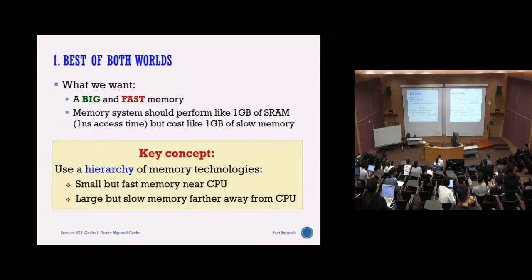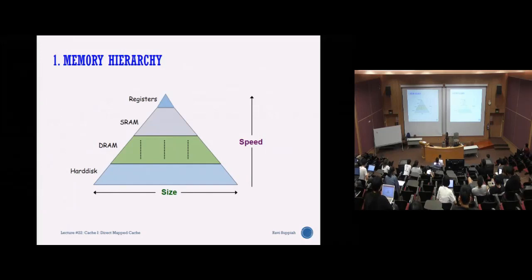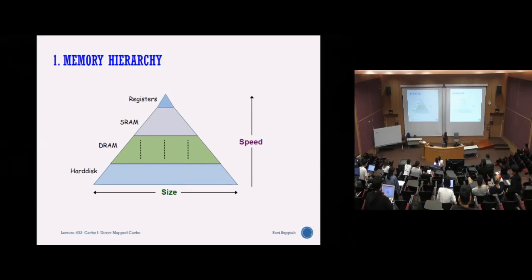We need a hierarchy to differentiate the various levels of access and put everything together. At the lowest level you have your hard disk or SSD drive which gives a lot of space and storage, but is still slower because it is an external device.